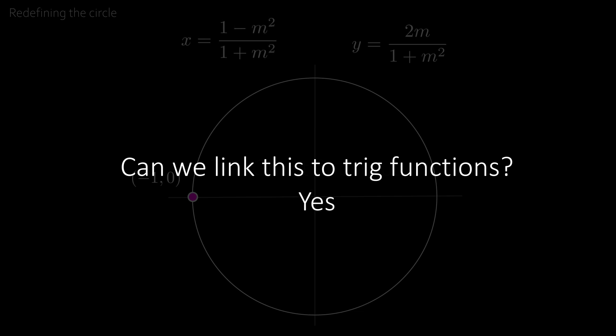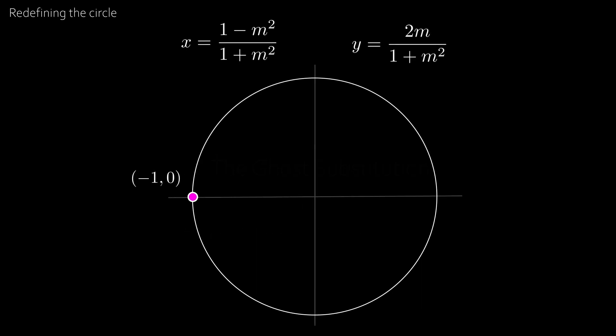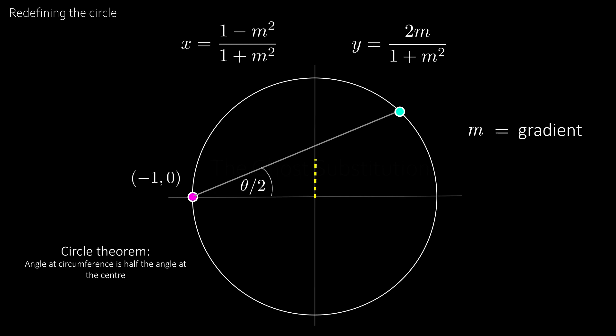And this is where we first witness the ghost substitution. Now let's take a point on the circle, and we know by a circle theorem that the angle at the circumference is half the angle at the centre. Now we recall that this m in our equation is the gradient, and the gradient is defined as the change in y over the change in x. And since this is a unit circle, the change in x is 1,